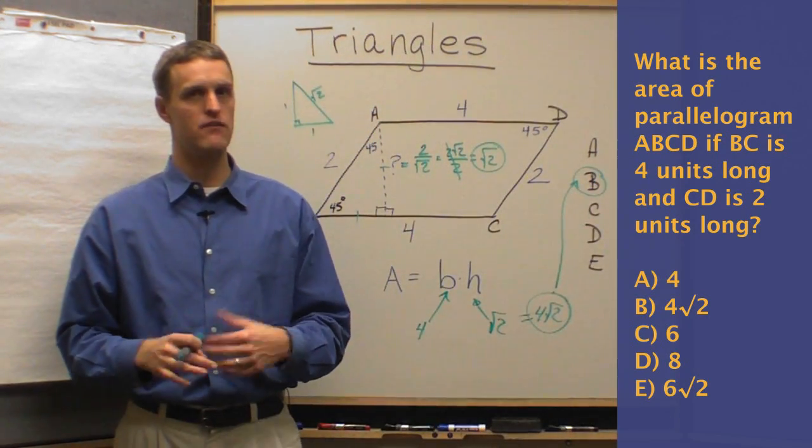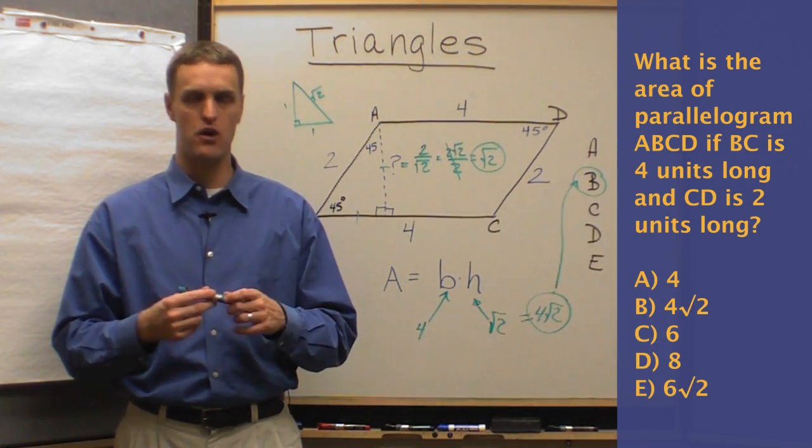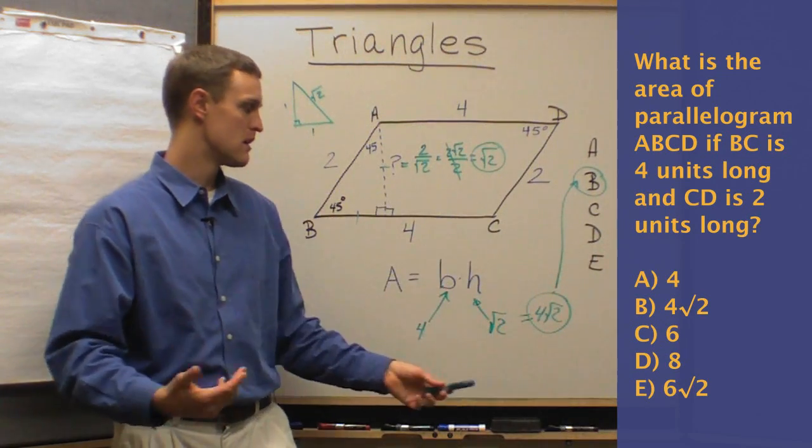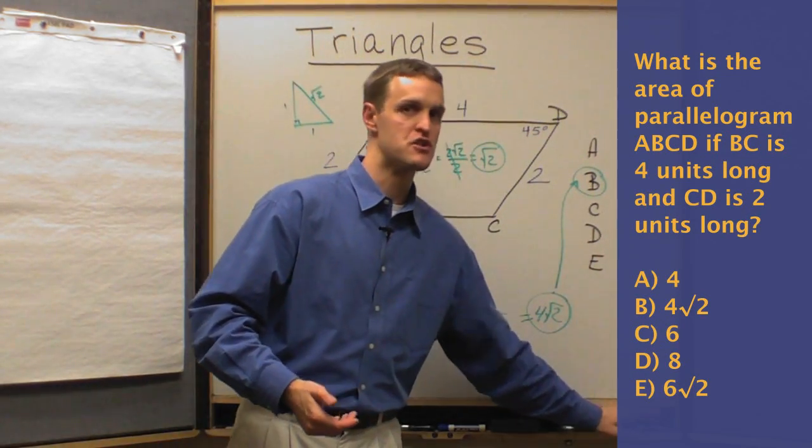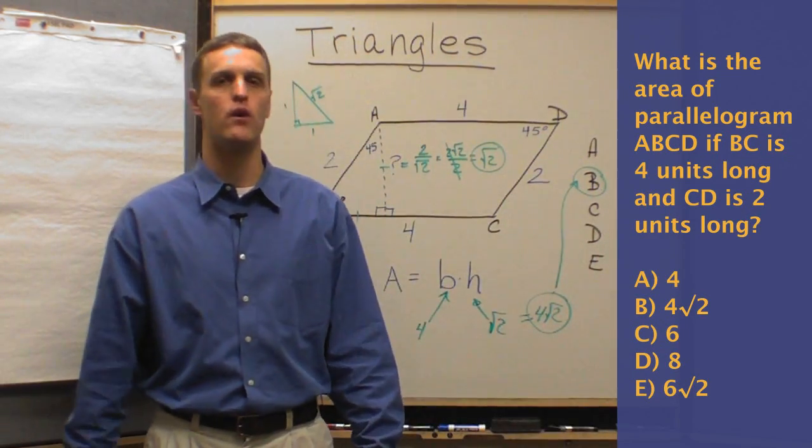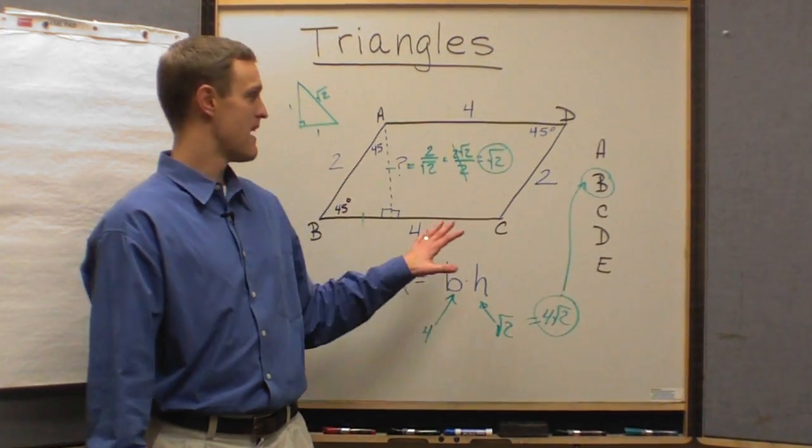Again, if you had approximated, if you didn't remember how to do this and you had to eyeball, you would also get answer choice B based on our approximations, knowing that the square root of 2 is about 1.4. So, nevertheless, hopefully that helps. Lots of application.